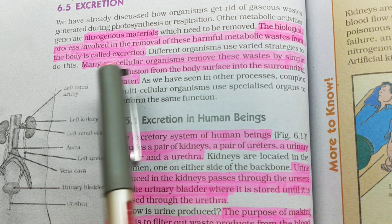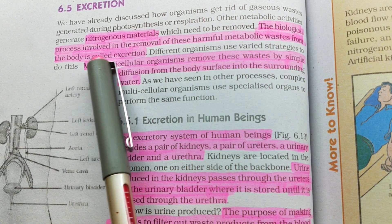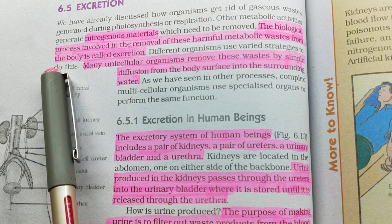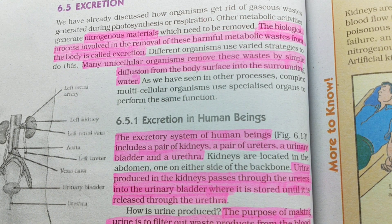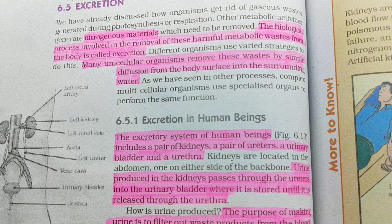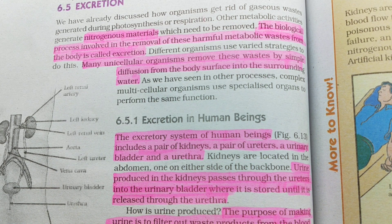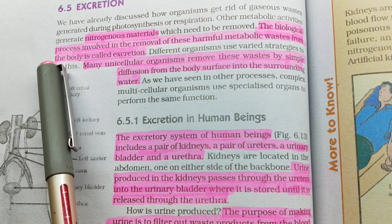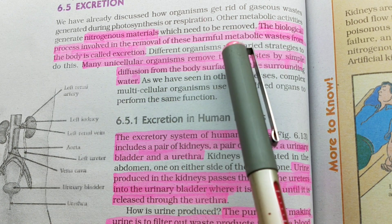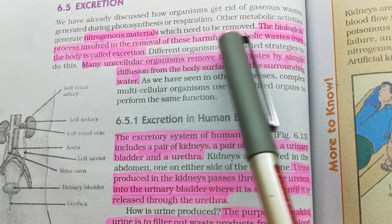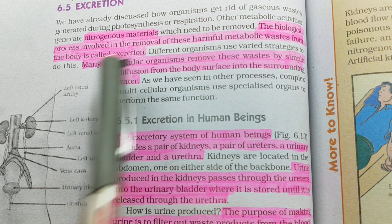The biological process involved in the removal of these harmful metabolic wastes from the body is called excretion. So, the definition of excretion: it is the biological process by which harmful metabolic waste produced inside our body is removed — woh hota hai excretion.